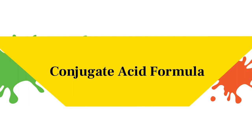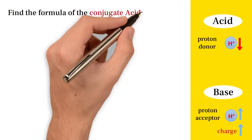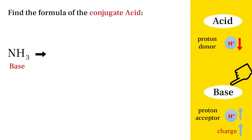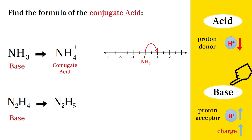Conjugate acid formula. Now let's learn how to find the formula of the conjugate acid. This means the following examples are bases which, as we know, will be proton acceptors. In the first example, NH3 is a base, so it will accept a proton and the number of its hydrogen atoms will increase, producing NH4⁺. Using the line number, NH3 has zero charge; since it is a base, it will accept a proton and its charge will increase — it will acquire one positive charge, forming the ammonium ion.